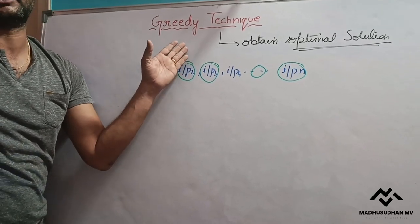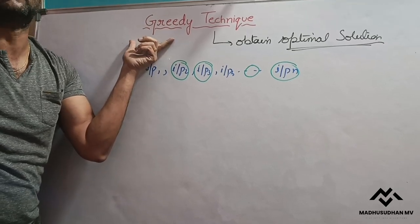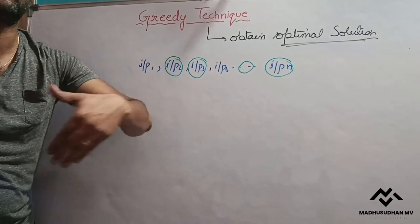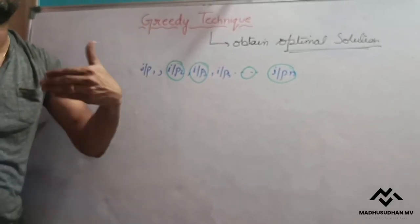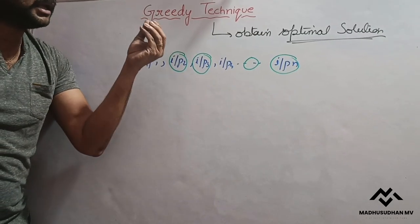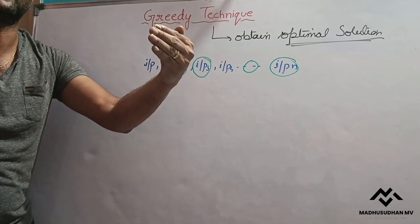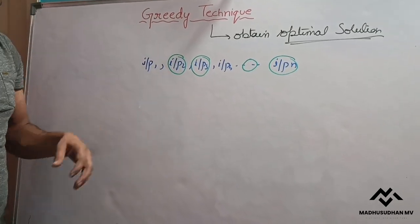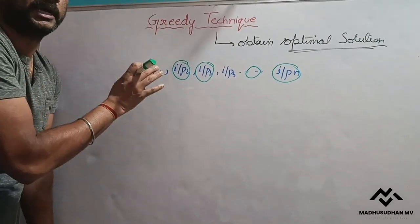Why is the name 'greedy'? The meaning of greedy is always wanting more — we are not happy with what we have, we are always looking for more. In terms of algorithms, this technique always wants to improve the quality and performance of the algorithm. Hence the name 'greedy.'